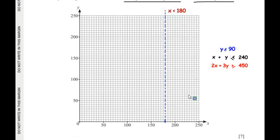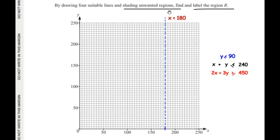For the shading: x < 180 means the region to the left of the line is the wanted region. The region to the right, where x > 180, is unwanted. We shade that entire right-hand region as unwanted.